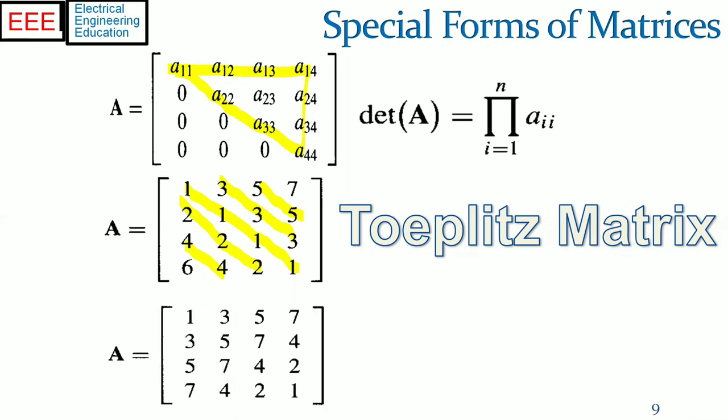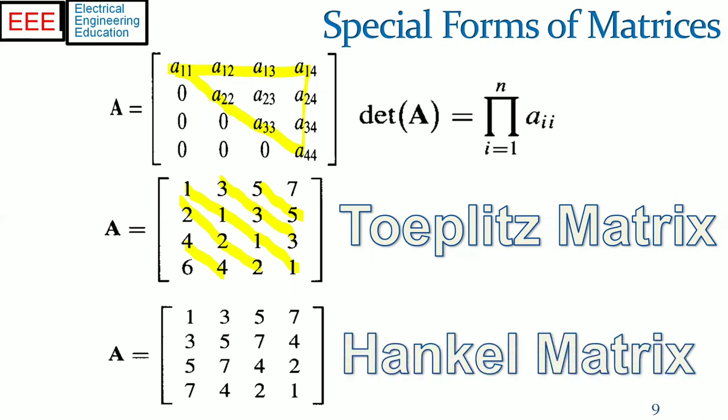A convolution or a correlation matrix is an example of a Toeplitz matrix. A matrix with a similar property is a Hankel matrix, which has equal elements along the diagonals which are perpendicular to the main diagonal.